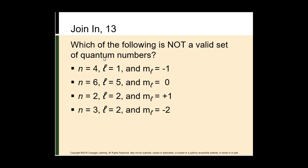Quick quiz: which of the following is not a valid set of quantum numbers? If n equals 4, can l equal 1, and can ml be negative 1? If n is equal to 6? If n equals 2? If n equals 3? L has to be at most n minus 1. We can't have l equal to n — so that would not be possible.